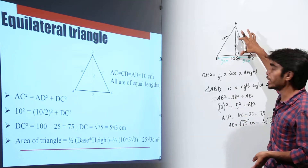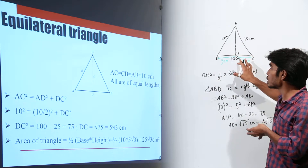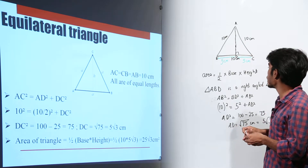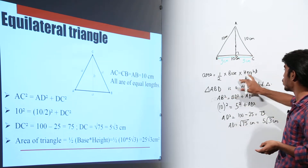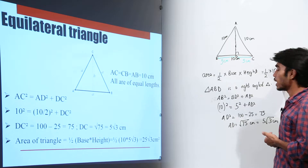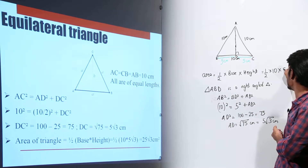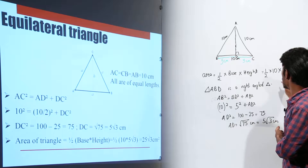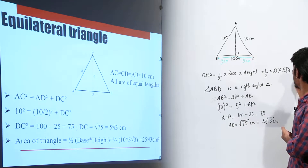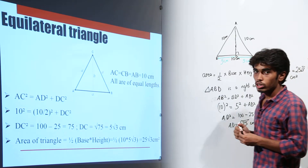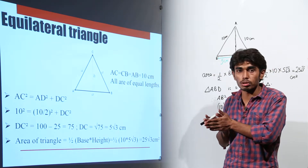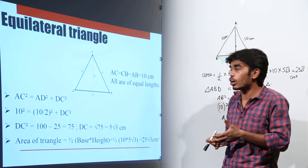We have now calculated the value of AD. We know the base was given as 10 centimeters and the height AD is 5√3 centimeters. So the area becomes half into 10 into 5√3, which gives us 25√3 centimeter square. By using Pythagoras theorem and dropping a perpendicular, we have found the area of the equilateral triangle.